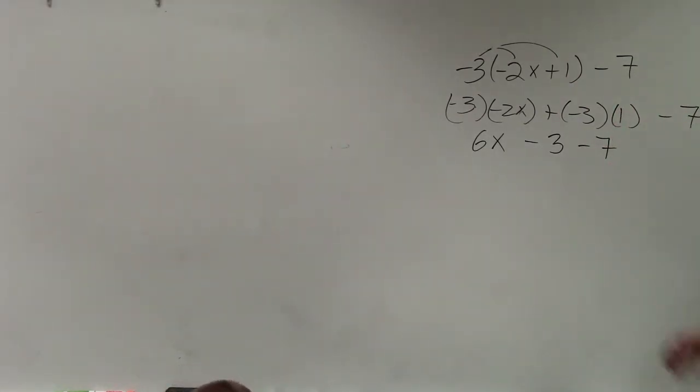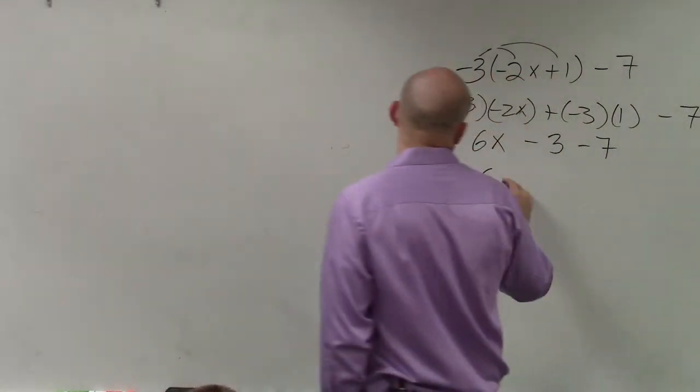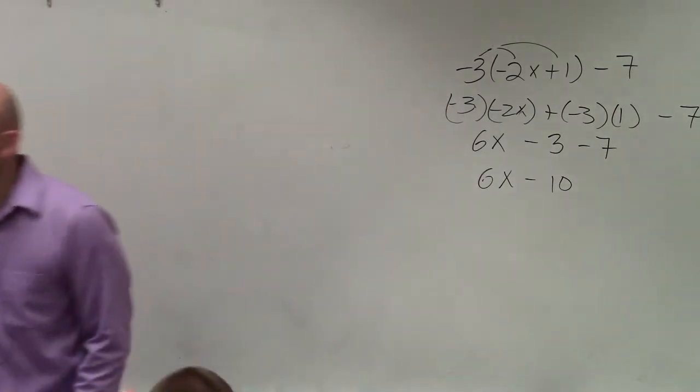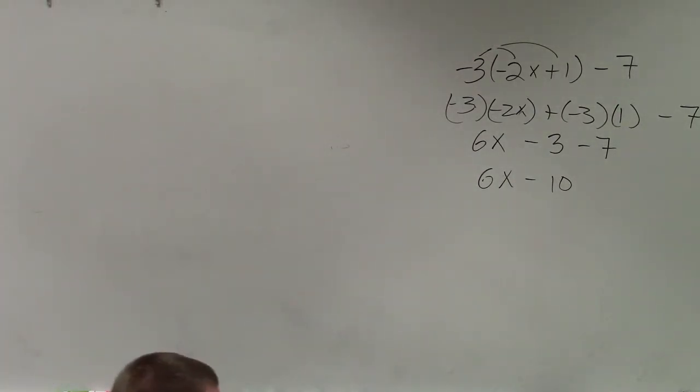All right, now I can combine -3 and -7, right? I can still simplify this. These are like terms. So always look to simplify with your like terms. So 6x, -3 minus 7 is going to be -10. All right, now we see we have our two terms, one has a variable, one does not.